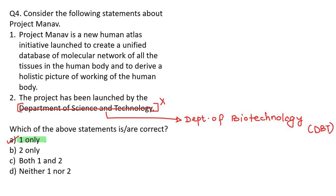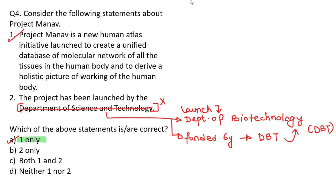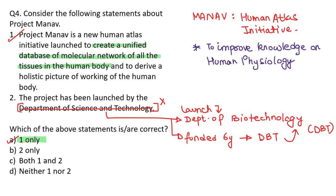It has been funded by DBT only — launched by DBT and funded by DBT. Project Manav is a human atlas initiative. It aims to improve knowledge on human physiology and create a database of the molecular network of all tissues in the human body. It will involve scientific skill development for annotation, science outreach, and handling big data.